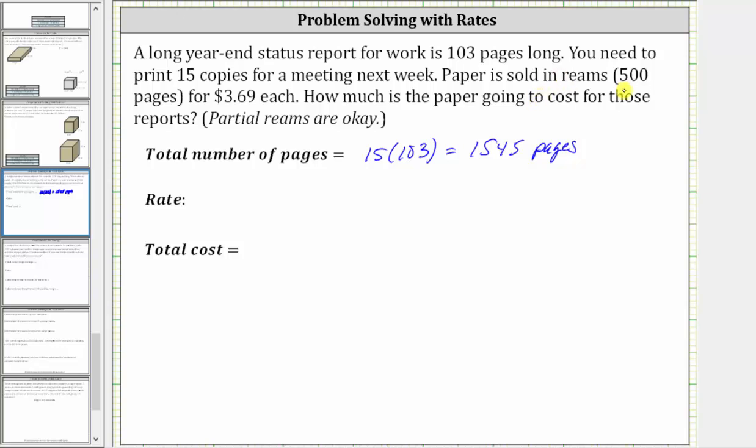The paper is sold in reams of 500 pages for $3.69, and we can express this rate two ways. One way would be to express the rate as 500 pages per $3.69, or we can express the rate as $3.69 per 500 pages.